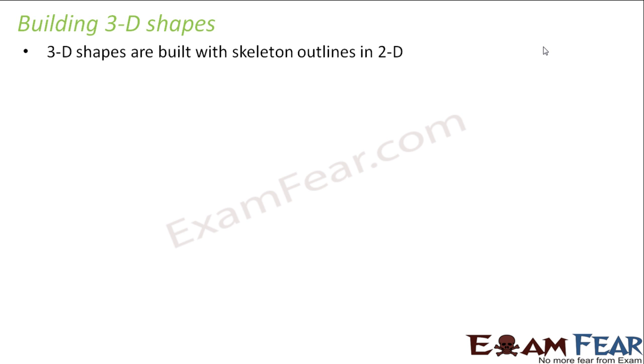So 3D shapes are built with skeleton outlines in 2D. Basically first we make a skeleton outline in two dimension and then we fold that outline to get a 3D shape. Sounds weird and interesting both right? So let us look at this example.